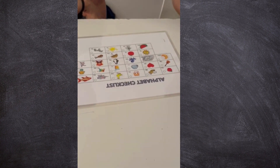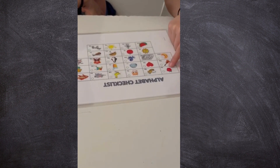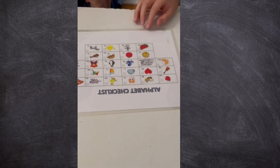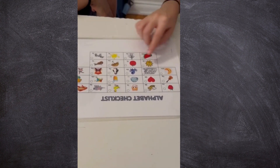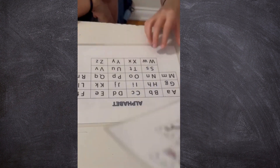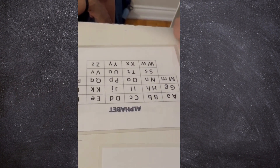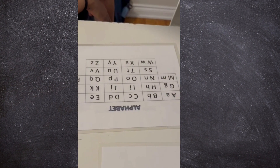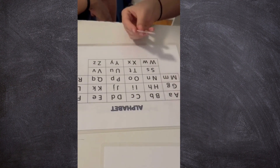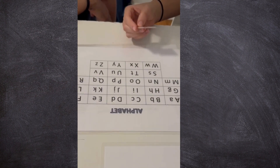First, you have the alphabet checklist. This is going to be used as a guide — A goes for apple, B goes with the P — and you're going to try to remember which one goes with each letter. Now you have the alphabet, and you're going to work on this with the alphabet checklist. You're going to have small little pieces with an image, and you're going to try to match each image with the correct alphabet letter.